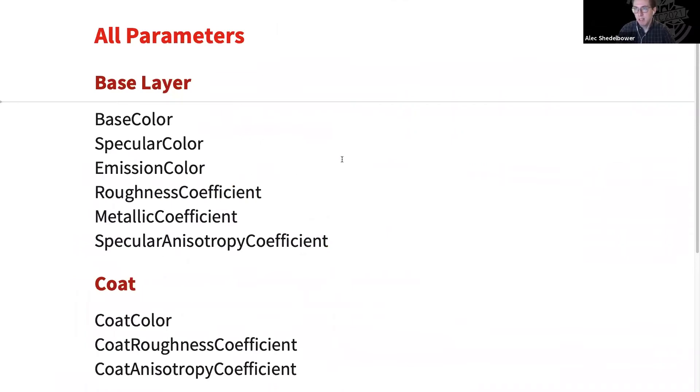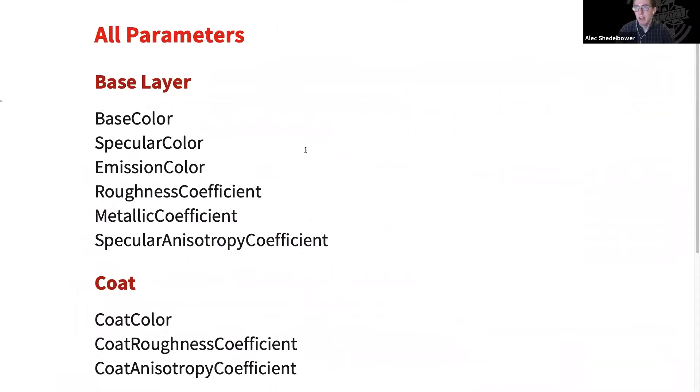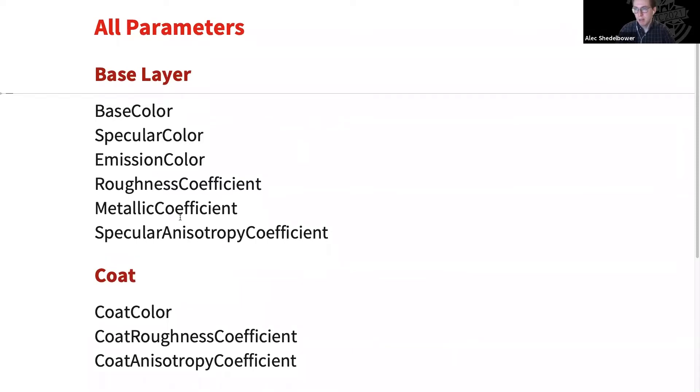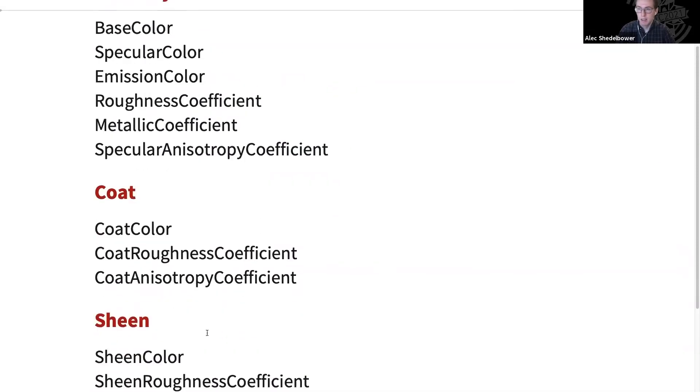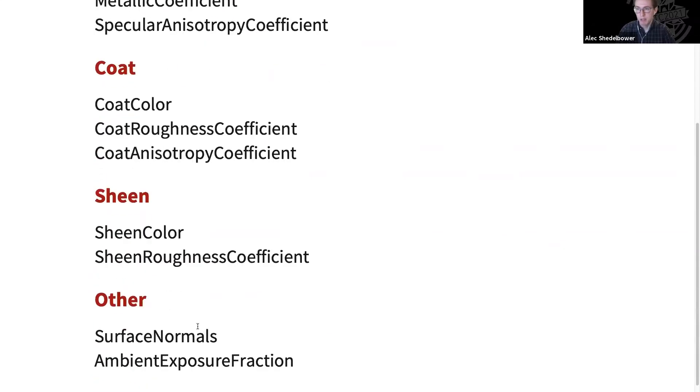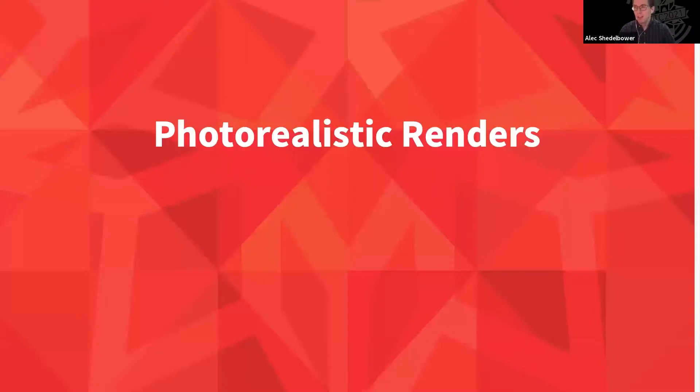So that was just a sum of parameters. Here's kind of a complete list. We have sort of the base layer parameters, followed by the coat parameters. And we end it with our sheen and then some miscellaneous ones that we'll get to. That's kind of the basics of MaterialShading. Now we're going to go into some more advanced uses of it to create these nice photorealistic materials.